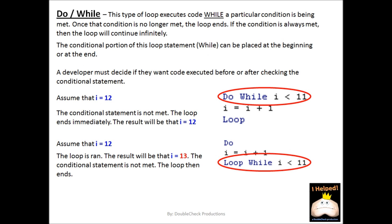The do-while loop executes code while a particular condition is being met. Once a condition is met, the loop ends. So if the condition is always being met and it never changes, then that loop will continue infinitely. What I want you to notice is that where you place your code — where you place the while condition — it will affect how the loop actually carries out.